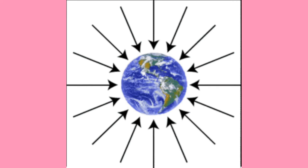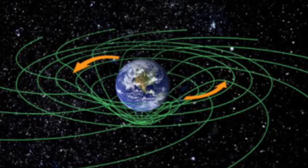The gravity pulls the layer of air towards the surface of the earth. Gravity kya karta hai? Apni taraf khichta hai. Isi liye joh atmosphere hai, woh earth ke charo dishao se ghera hua rehta hai.